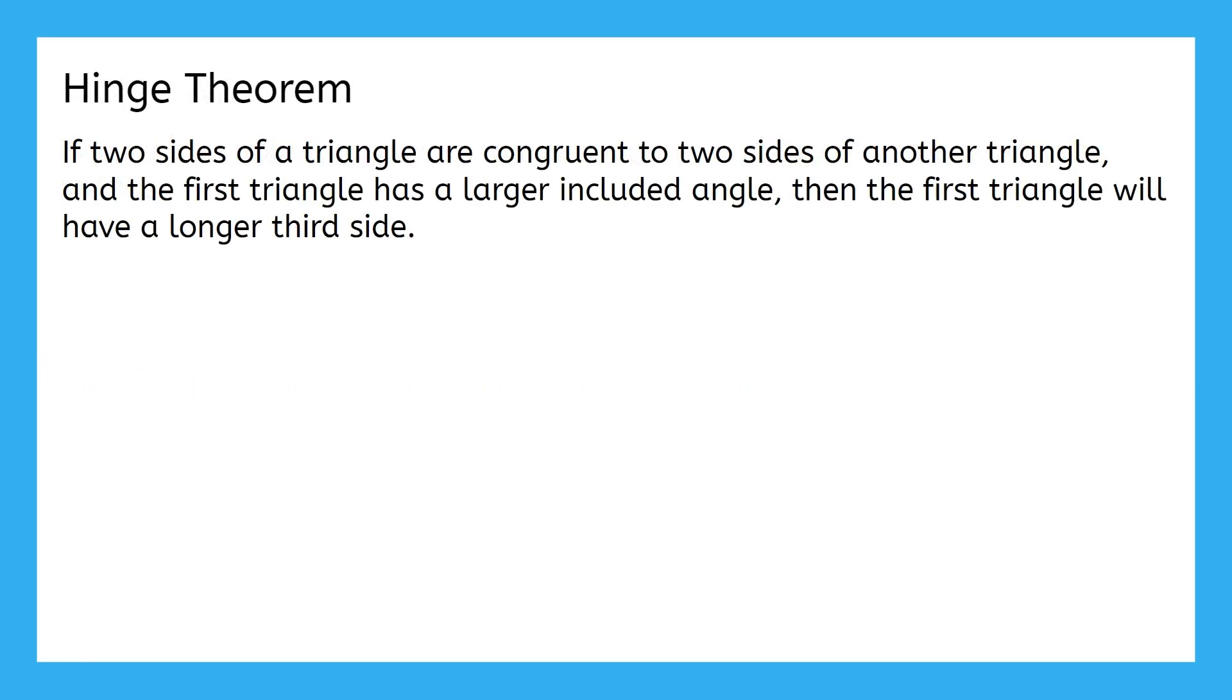Let's start with the Hinge Theorem. It says, if two sides of a triangle are congruent to two sides of another triangle, and the first triangle has a larger included angle, then the first triangle will have a longer third side.